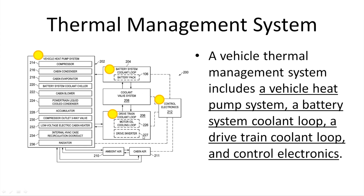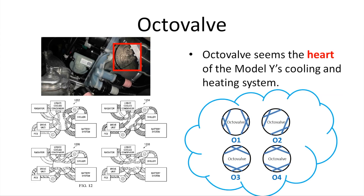The battery system coolant loop and the drivetrain coolant loop are in contact with the heat pump system by circulating coolant flows. The control electronics control different settings of the components such as the operation of the compressor, coolant pumps, octa valve, and compressor outlet three-way valve. Here is a recent photo of the octa valve taken by auto teardown expert Sandy Munro.